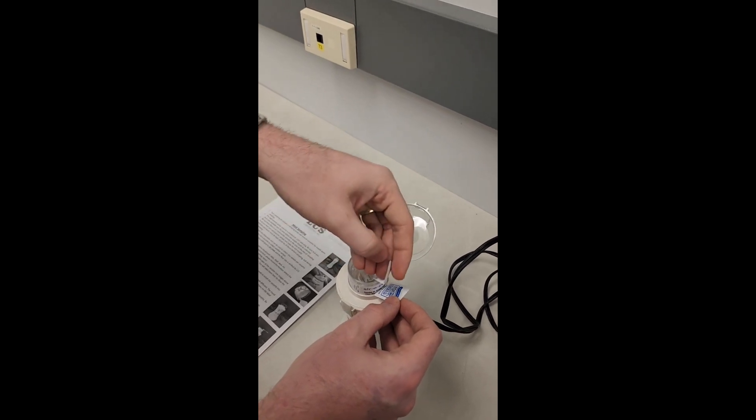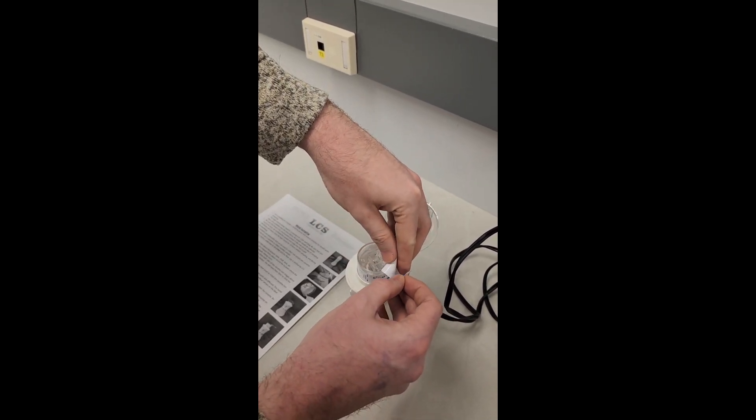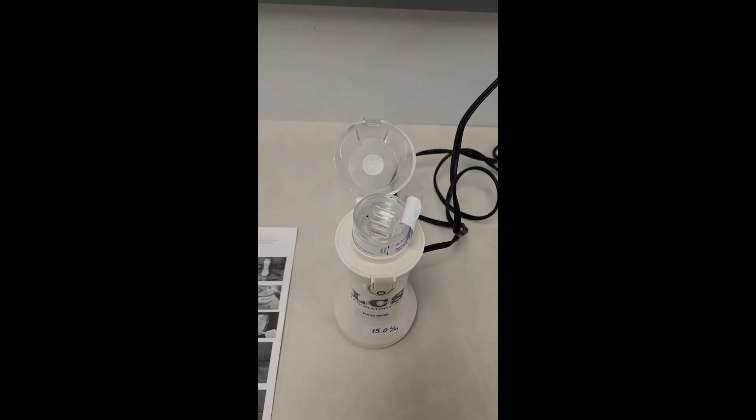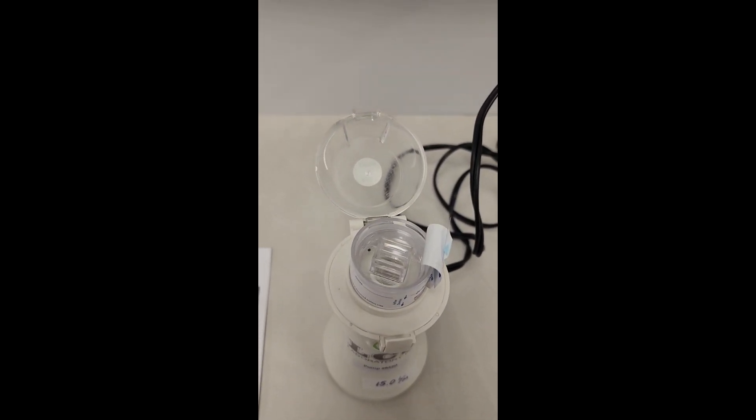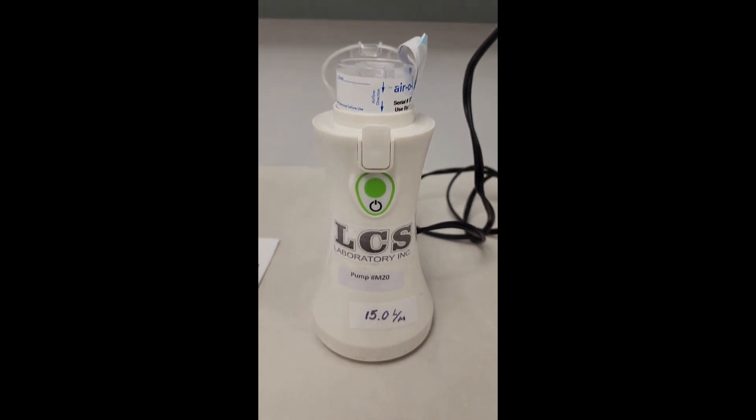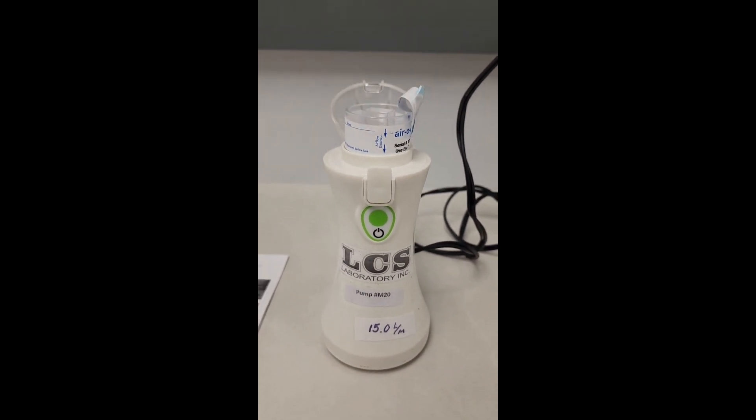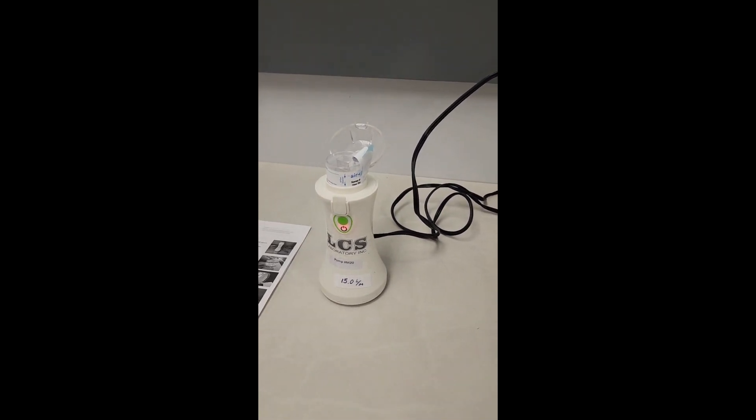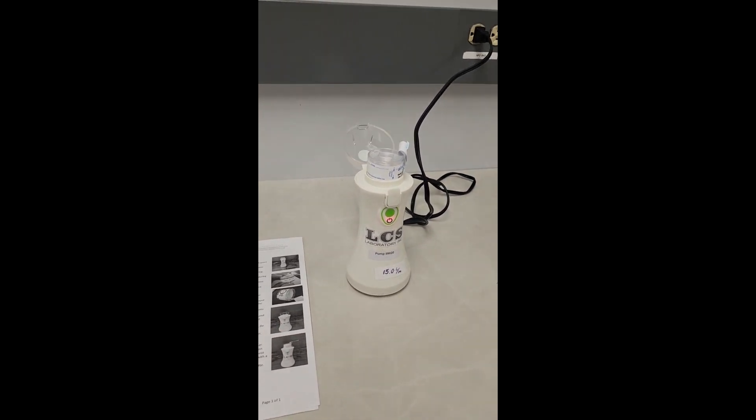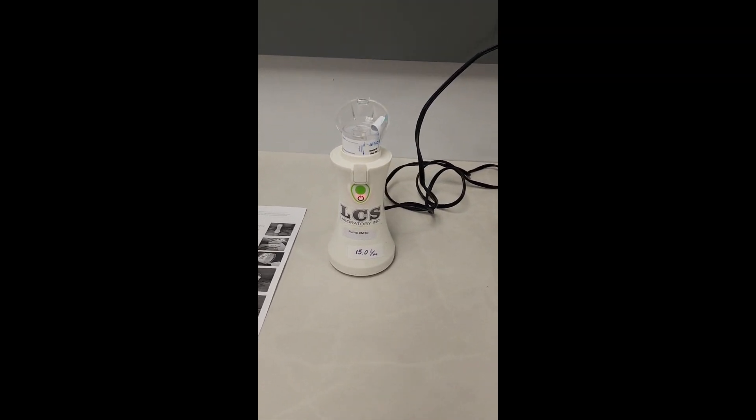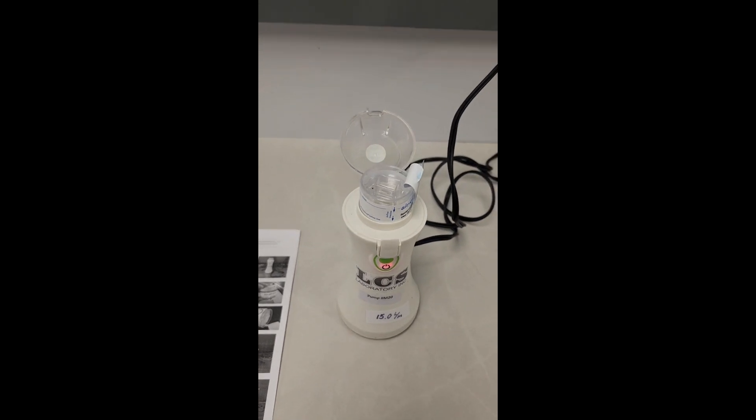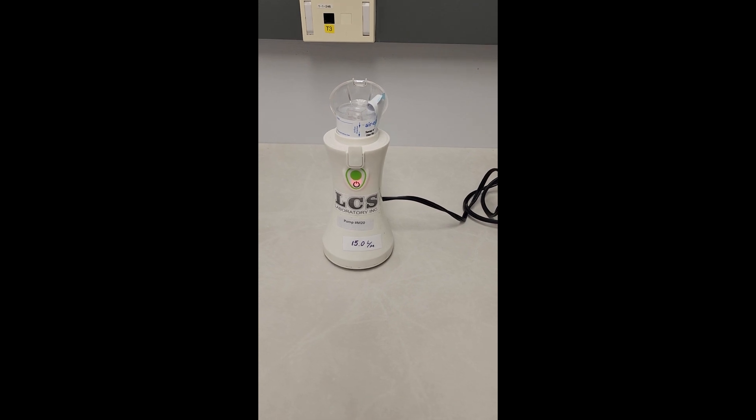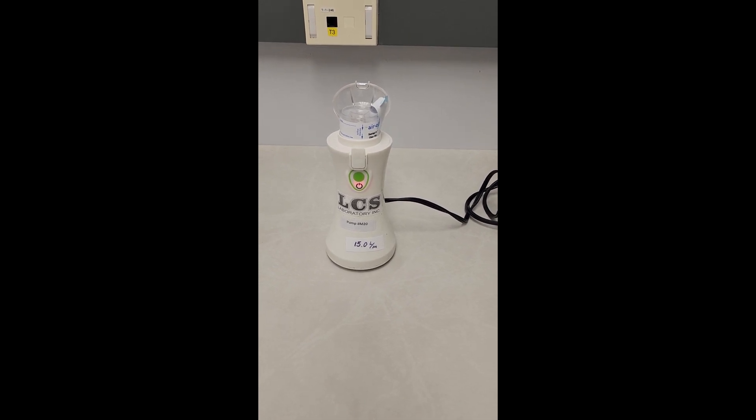The airflow directional arrow on the cassette should be pointing towards the bottom of the pump. Press the green circle on the pump to turn the pump on. You will audibly hear the pump start up. The pump will turn off automatically after 5 minutes.